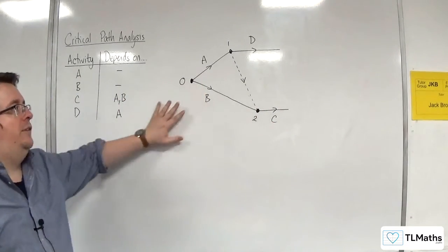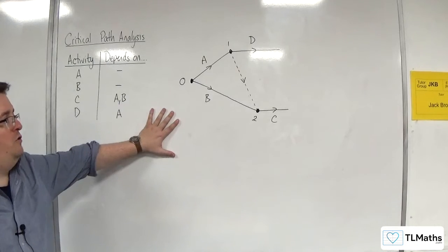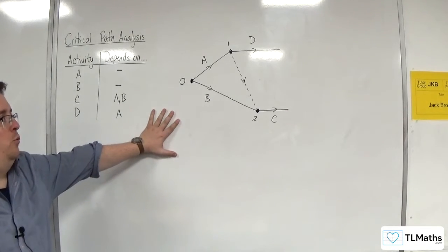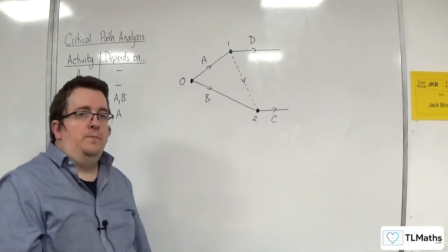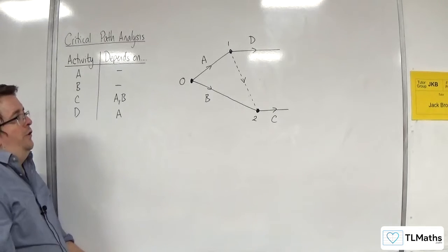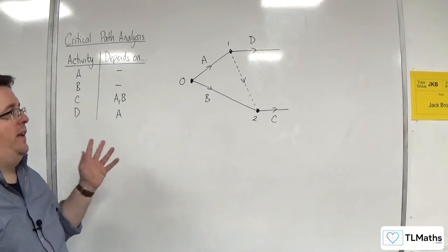And then I can have my activity C coming off of that node. Of course, I do also now need C and D connecting, and I'll redraw it in a moment. But this is what the dummy activity is there to do. It allows me to connect up activities A and B.